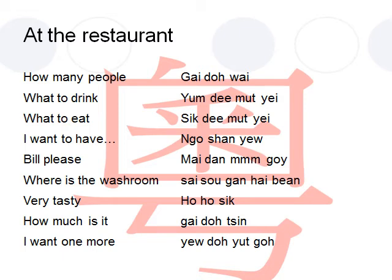Here we have a set of phrases you would usually encounter at any restaurant that speaks Cantonese. When you first arrive at a restaurant, most employees there would ask you how many people. How many people in Cantonese, particularly in a restaurant setting, would be 幾多位?